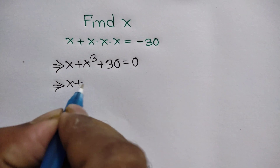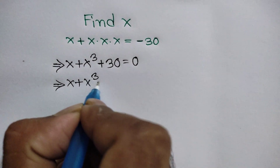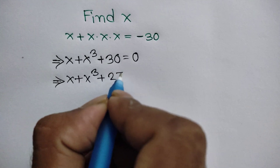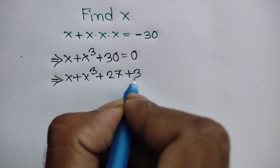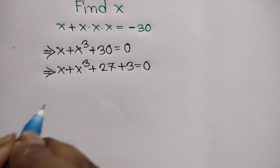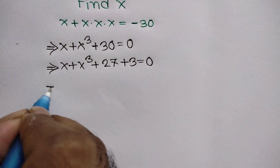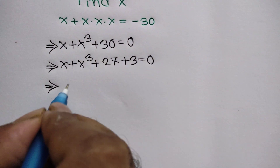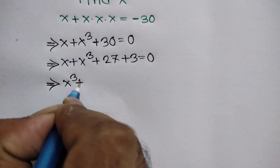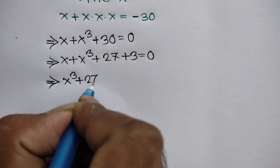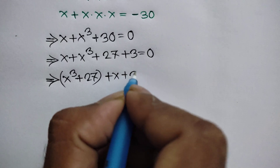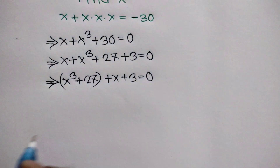Now this 30 can be written as 27 plus 3, so we have x plus x cubed plus 27 plus 3 is equal to 0. Rearranging the left side, we can write x cubed plus 27 plus x plus 3 is equal to 0.